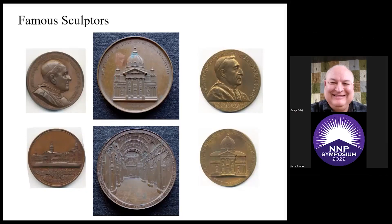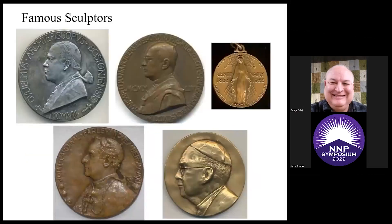I want to give you some highlights. This group of images will focus on famous artists. From Philadelphia, we have William H. Key, Anthony Paquette, and George Morgan. They depict, at left, St. Charles Borromeo Seminary, which is the major seminary of Philadelphia Archdiocese, and the other two medals depict the cathedral of St. Peter and St. Paul. On the top row, we have a medal for William O'Connell, Archbishop of Boston, by Bella Lyon Pratt; Aureo Mastruzzi, a medalist known for his papal medals, honoring Cardinal Spellman; and the Centennial Medal for the Diocese of Burlington, Vermont, by Robert Wyman.